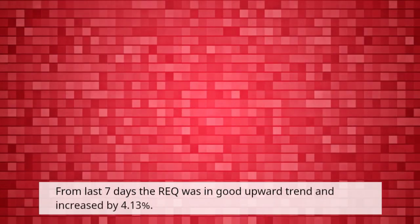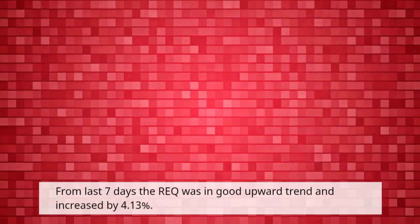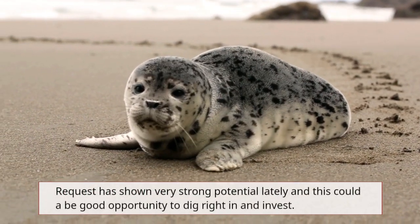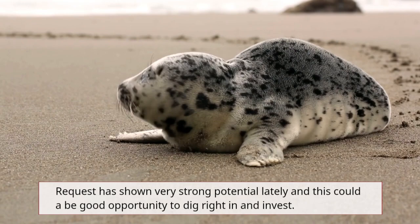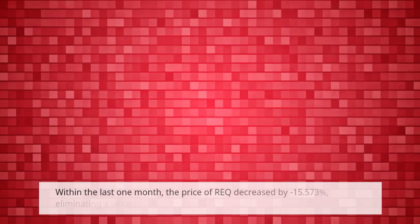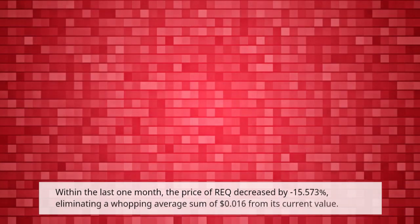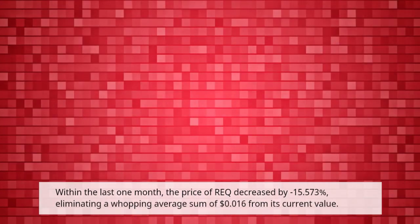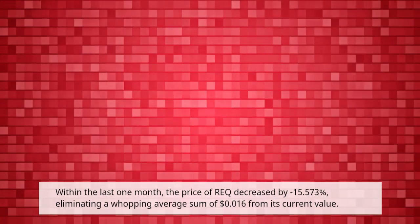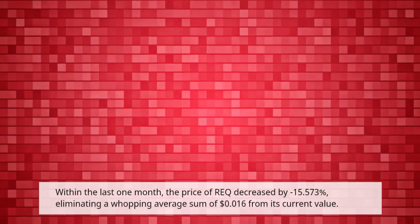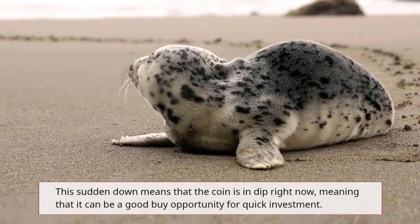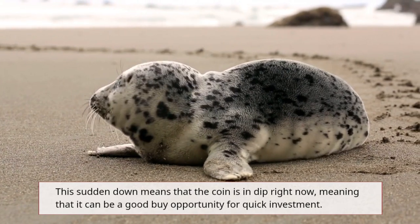Over the last 7 days, REQ was in a good upward trend and increased by 4.13%. Request has shown very strong potential lately and this could be a good opportunity to dig right in and invest. Within the last 1 month, the price of REQ decreased by minus 15.573%, eliminating a whopping average sum of $0.016 from its current value. This sudden drop means that the coin is in a dip right now, meaning that it can be a good buy opportunity for quick investment.